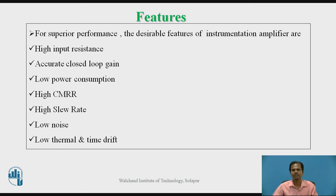The desirable features of instrumentation amplifier for superior performance are: it should have high input resistance, accurate closed loop gain, low power consumption, and high CMRR — CMRR stands for common mode rejection ratio. It should have high slew rate, meaning the rate of change of output voltage should be high, as well as low noise and low thermal and time drift, so the output should not change with respect to time or change in temperature and should contain a minimum amount of noise.